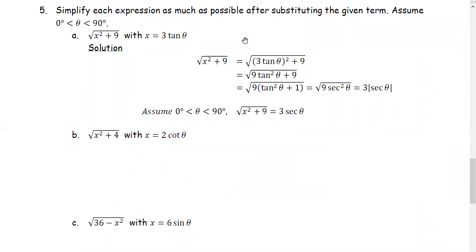For example 5, simplify each expression as much as possible after substituting the given term. Assume theta is between 0 degrees and 90 degrees. In part a, the expression is square root of x squared plus 9, and we will substitute x by 3 times the tangent theta.